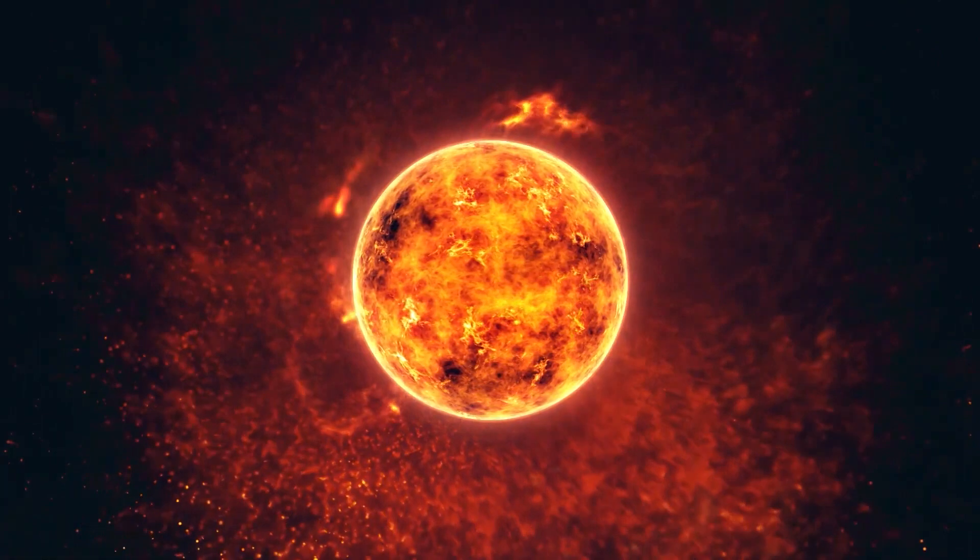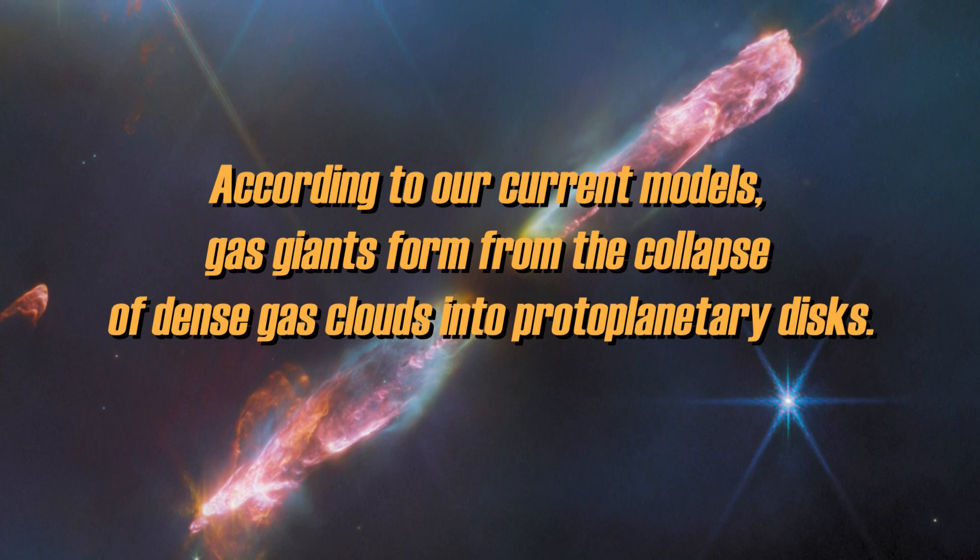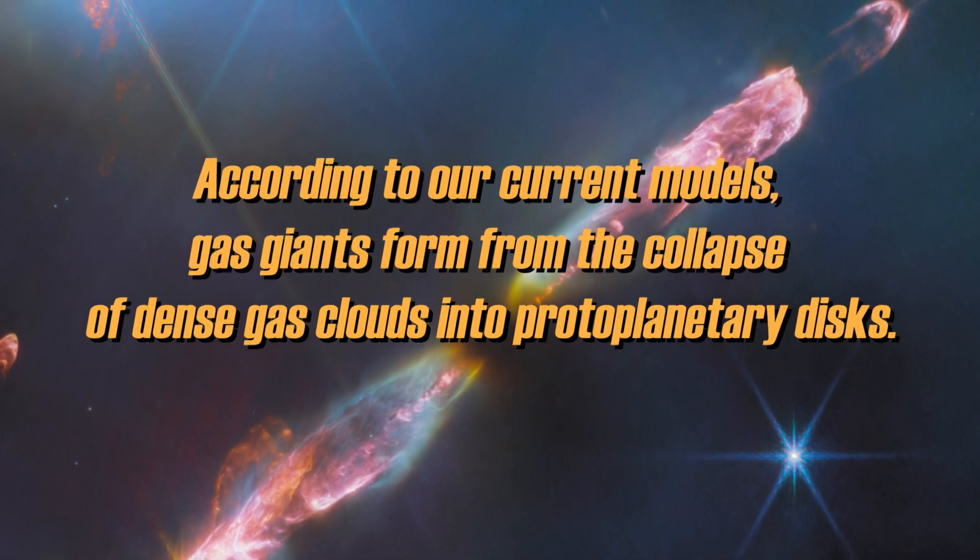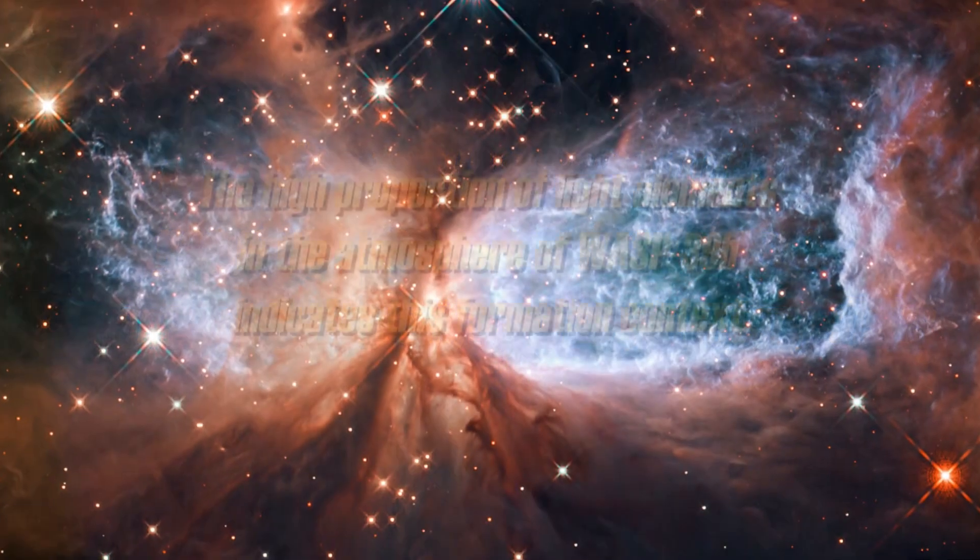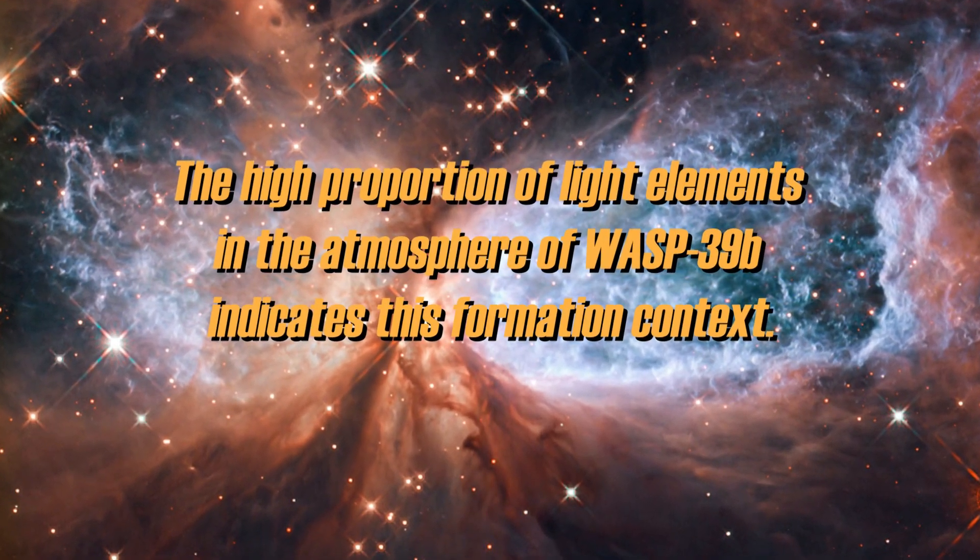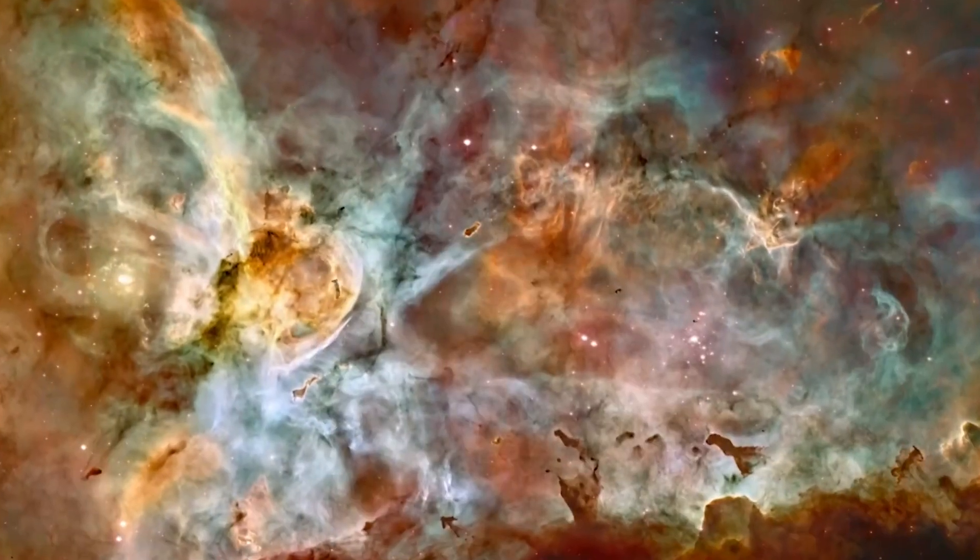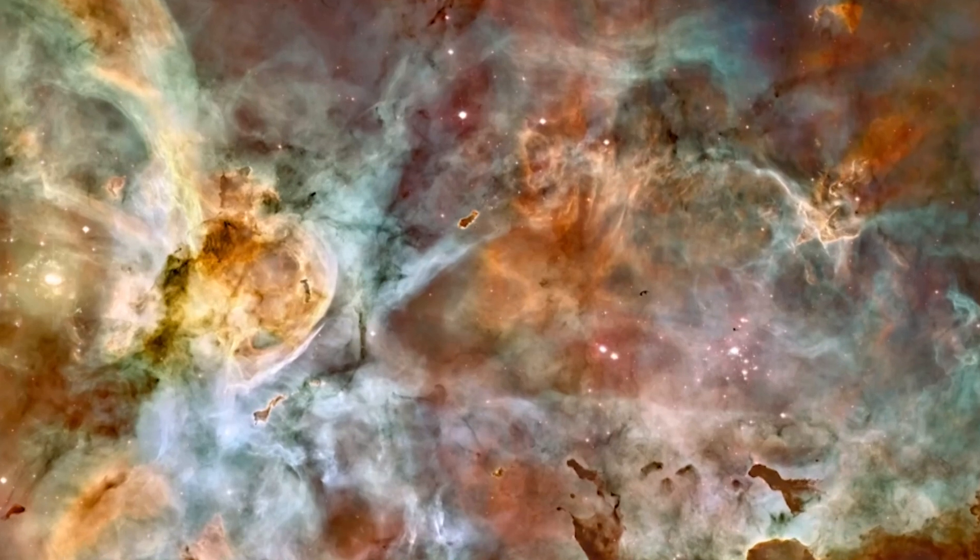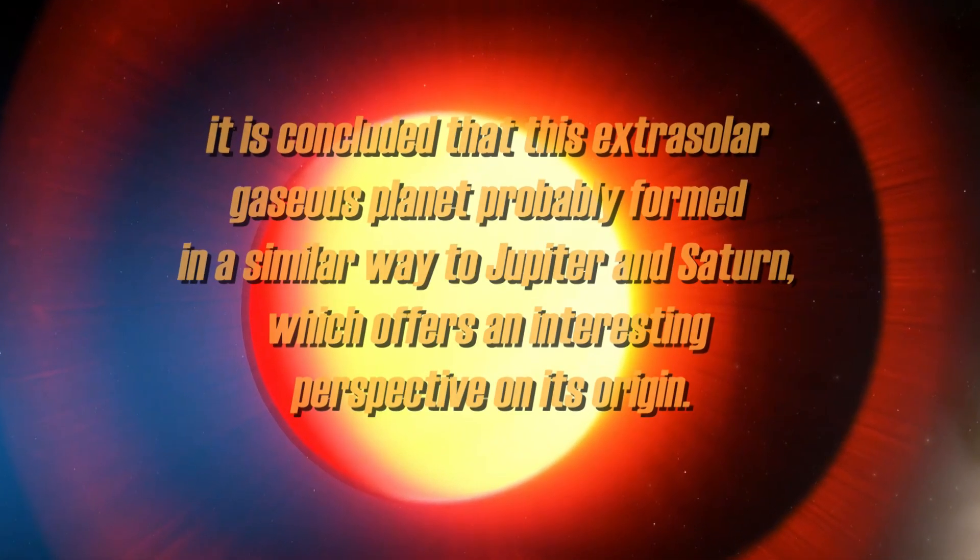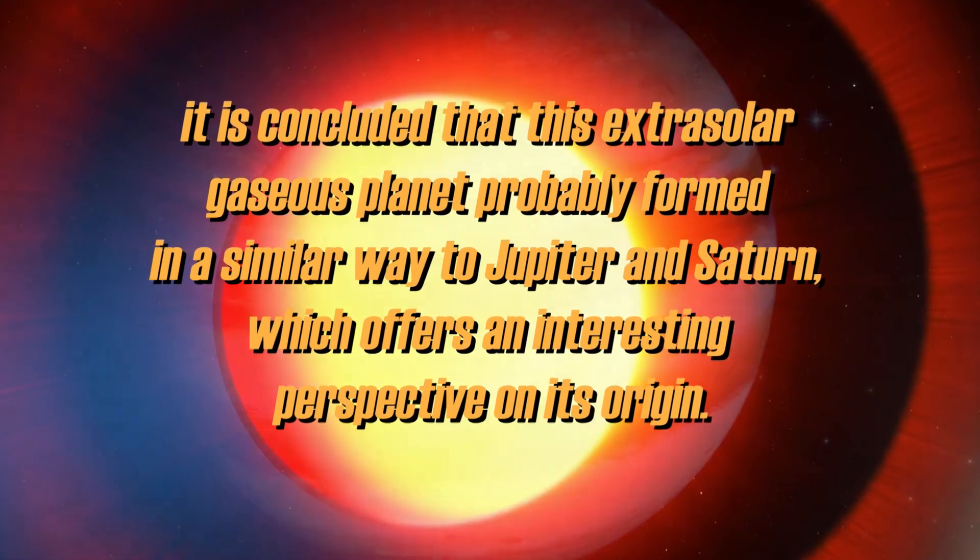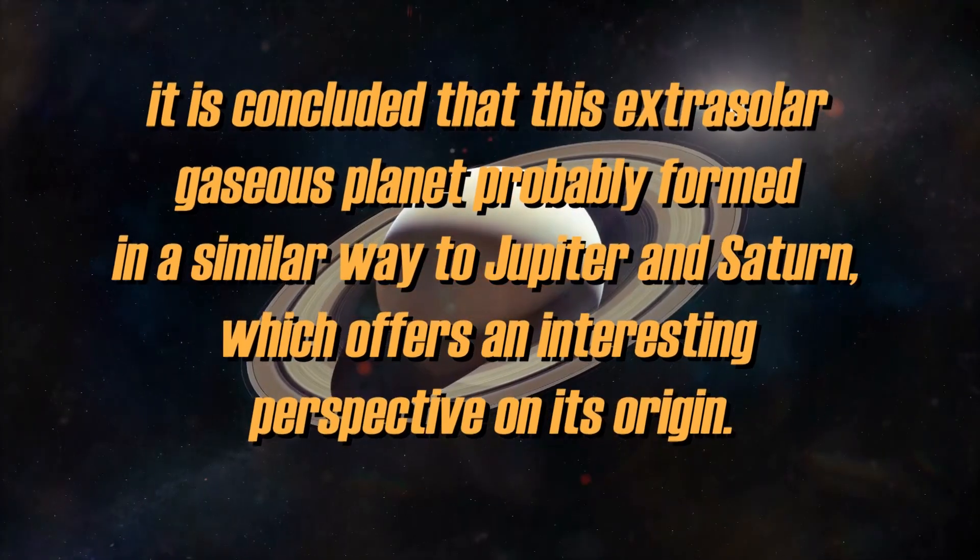In addition, its low volatile element content is also relevant. According to our current models, gas giants form from the collapse of dense gas clouds into protoplanetary disks. The high proportion of light elements in the atmosphere of WASP-39b indicates this formation context. However, the situation is somewhat different in terms of solid matter enrichment. Based on the information obtained, it is concluded that this extrasolar gaseous planet probably formed in a similar way to Jupiter and Saturn, which offers an interesting perspective on its origin.